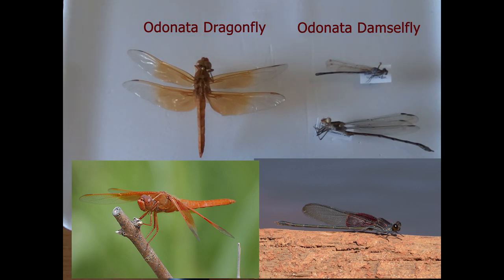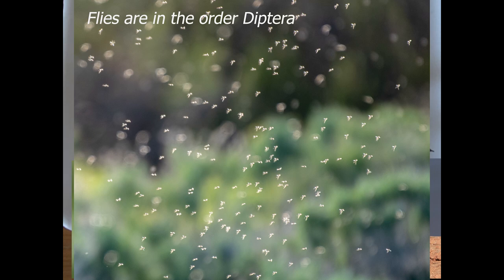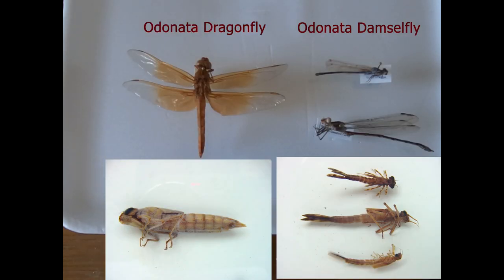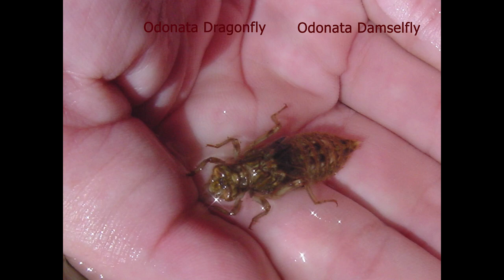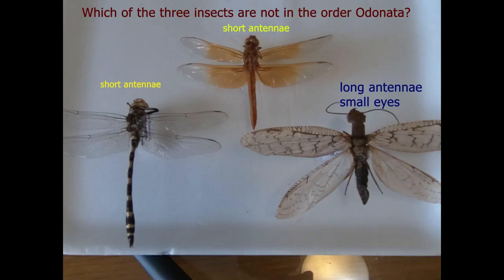Both dragonflies and damselflies are extremely efficient predators — they catch and eat mosquitoes and other small flying insects as adults. As juveniles they are larvae, so these are aquatic insects and part of their life cycle is spent in water. The larvae capture anything they can grab hold of, whether it's another insect larva, a member of their own species, fish, or tadpoles. They are really effective predators wherever they are.